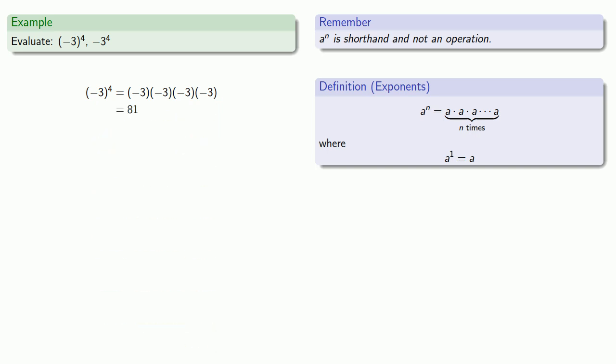Meanwhile, this negative 3 to power 4, the 4 is attached to the 3 directly. And so that gives us 4 copies of 3 with the negative out front. And that gives us negative 81.